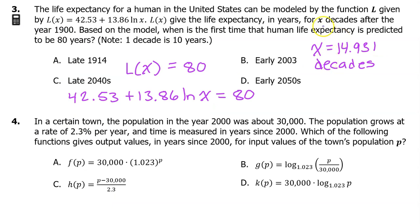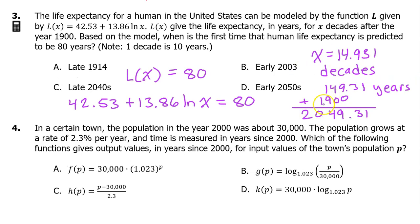Remember, x is the number of decades after 1900. So 14.931 decades is 149.31 years after 1900. Adding 1900 to 149.31, we get 2049.31. So we are talking about the late 2040s. So the answer is C.